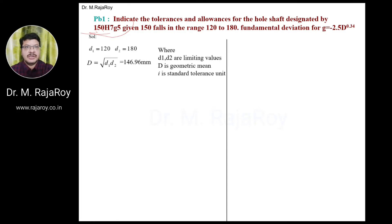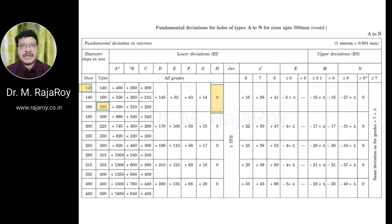The first step is to find the limiting values for the given size 150. d1 and d2 are the limiting values — here d1 is given as 120 and d2 is 180. From d1 and d2 you have to calculate the geometric mean, that is capital D. If the limiting values are not given in the problem, you have to collect those values from the data book. In the data book, a table is available where you can identify the limiting values. For the range covering 150, the starting value is 120 and the ending value is 180.